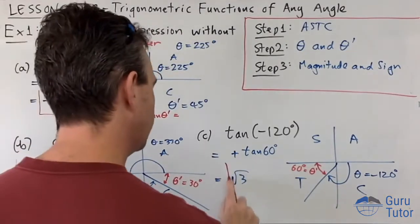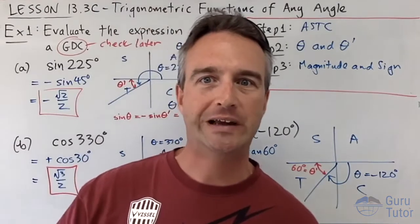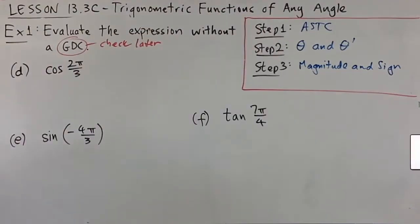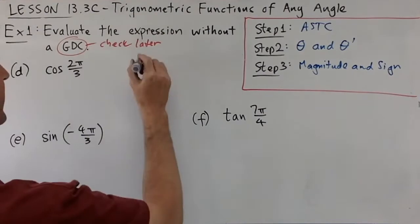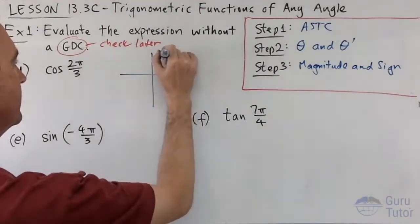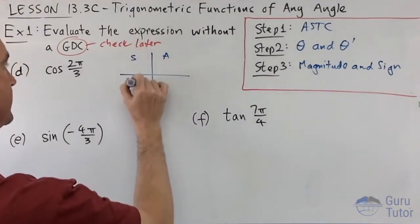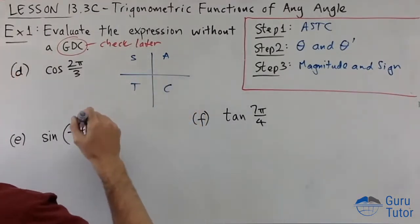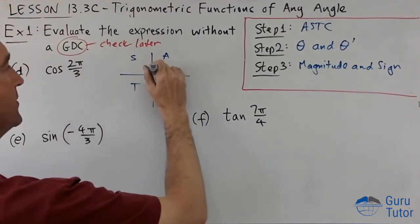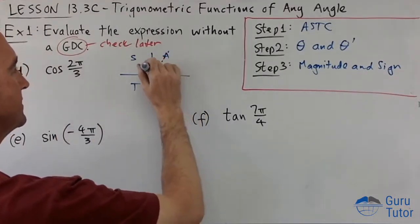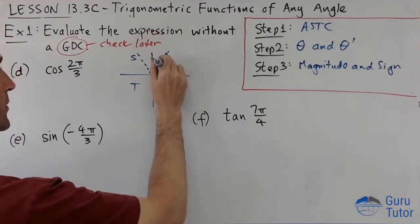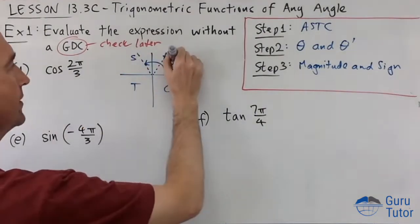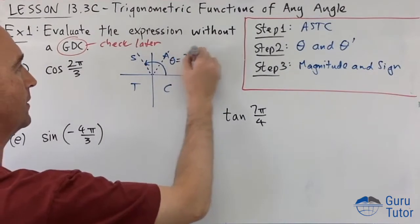Those were three examples in degrees. Let's do three in radians. cos(2π/3): first thing, ASTC. Now we're thinking in radians — where is 2π/3? It's multiples of π/3, which are our 60° intervals. So we've got π/3, 2π/3 — there we are, in the second quadrant. θ is 2π/3.